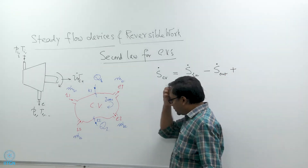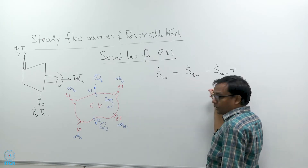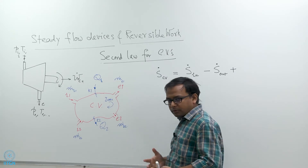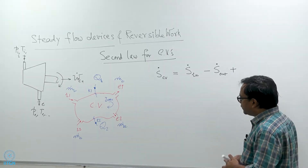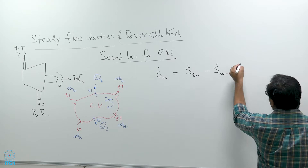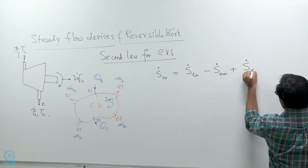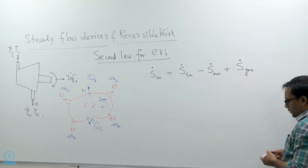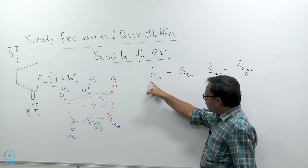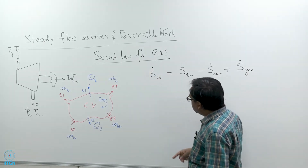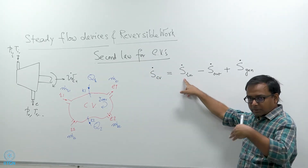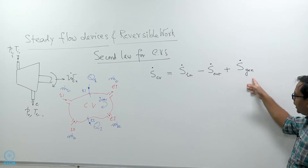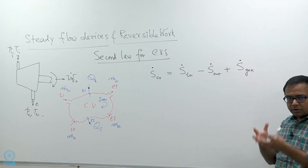The special case for entropy is that even if there is no entropy flowing in or flowing out, entropy can still increase because of entropy generation. Entropy is something which is not conserved — it can be generated because of irreversibilities. So you have to add one more term which takes care of entropy generation: the rate at which entropy is being generated because of irreversibilities. The rate of change of entropy of a control volume equals the rate in minus the rate out plus the rate of entropy generation.